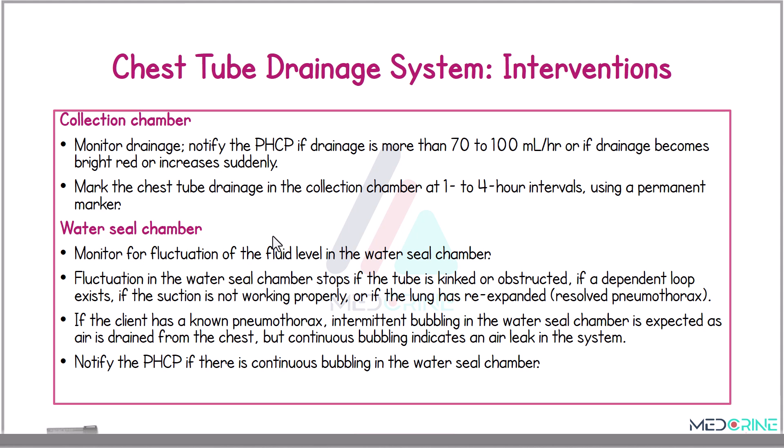On the water seal chamber, we monitor for fluctuation of the fluid level. Fluctuation stops if the tube is kinked or obstructed, if an independent leak exists, if suction is not working properly, or if the lung has re-expanded, meaning the pneumothorax has resolved. If the patient has a pneumothorax, intermittent bubbling in the water seal chamber is expected as air is being drained from the chest, but continuous bubbling usually indicates an air leak in the system.